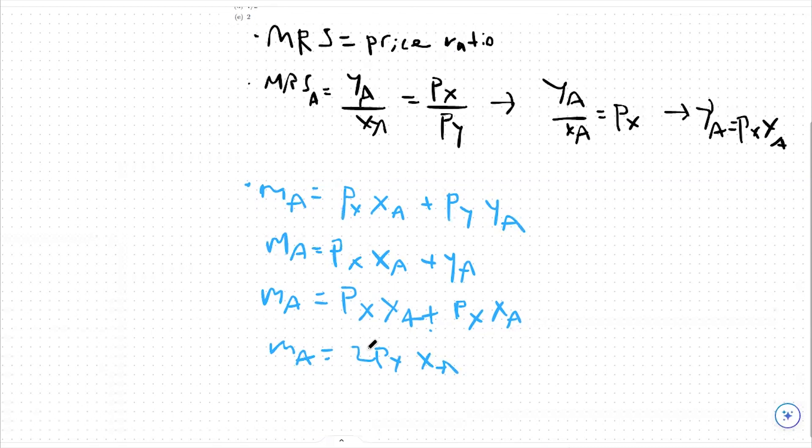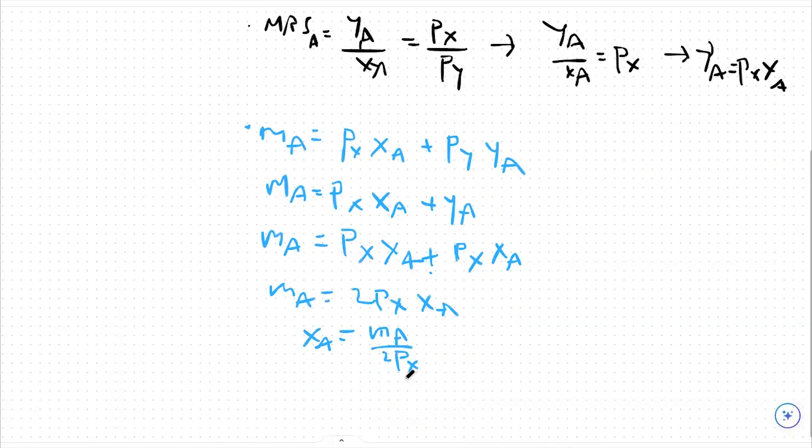So MA is equal to 2px times xA. And from there, we can do some rearranging to solve for xA and say xA is equal to MA over 2px. That's our idea of what amount of xA we will purchase given our income and our price.